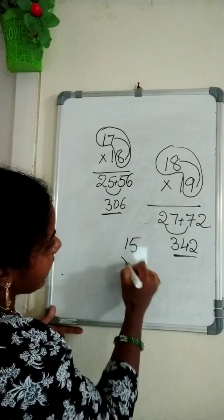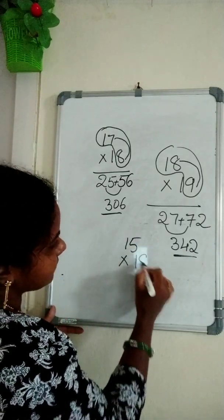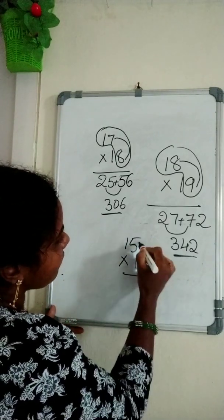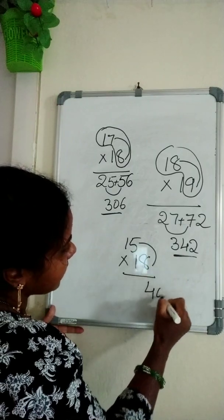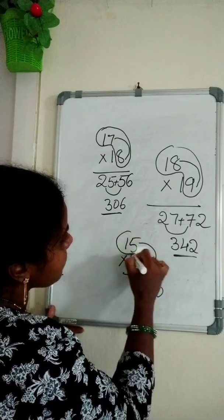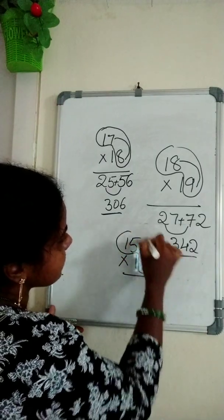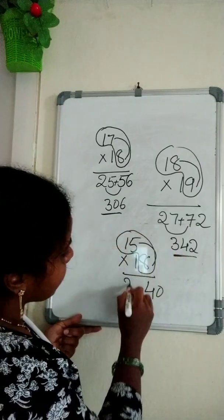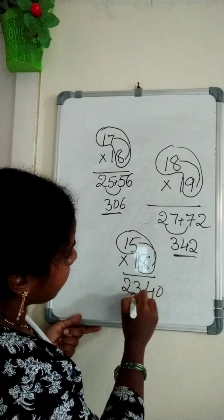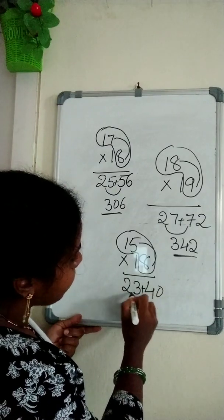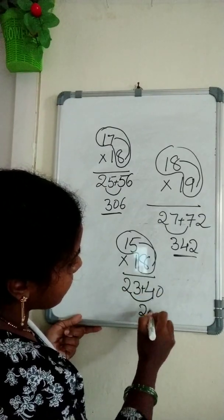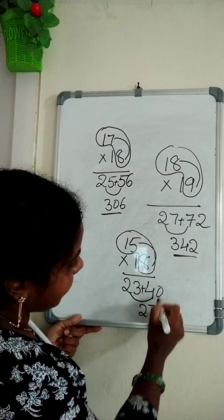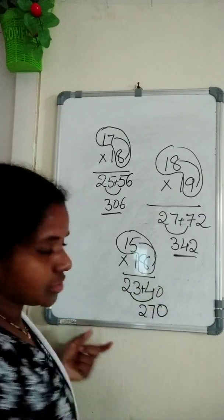15 eights. 5 eights — 40. 15 plus 8 is 23. Now 23 plus 4 is 27. And this last 0 — 270.